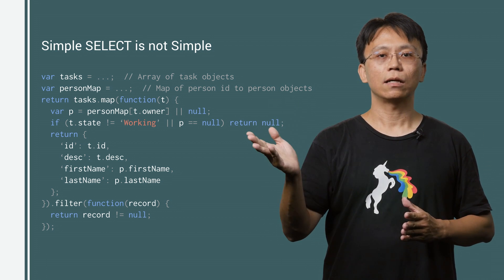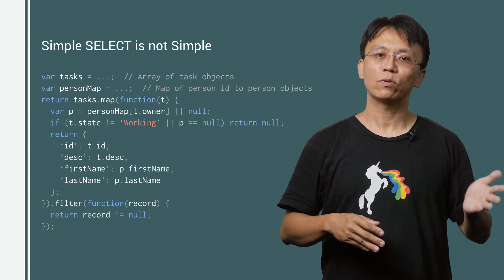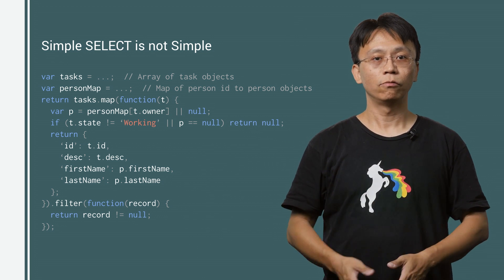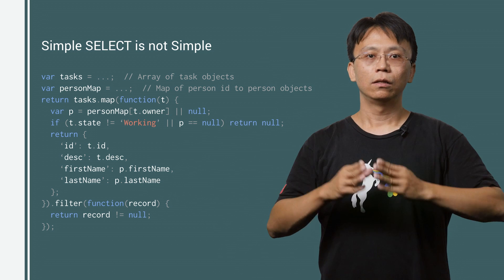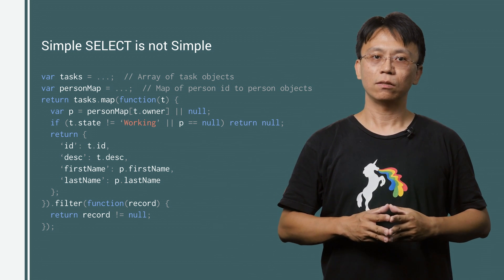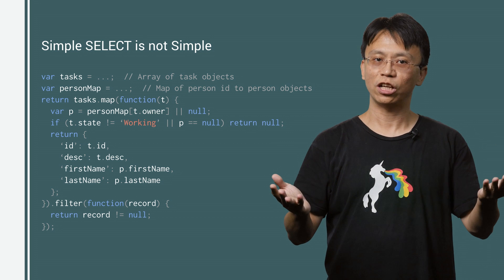Say we have an array of task objects, a hash table that maps person ID to person objects. To do the select, we need this wall of code. This code's problem is not only the size, but also how much effort needed to maintain or change it.